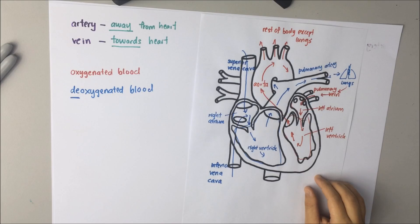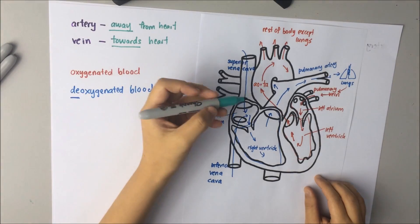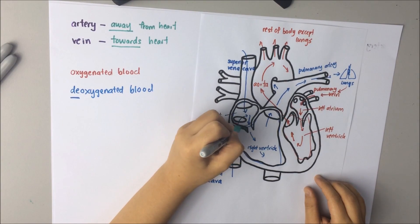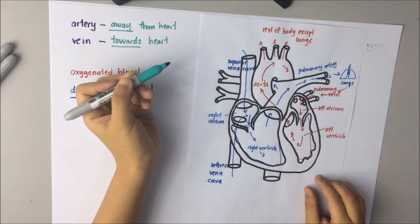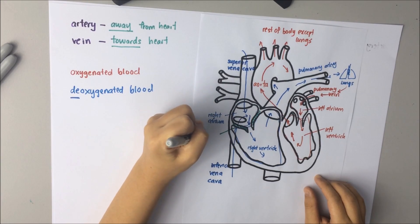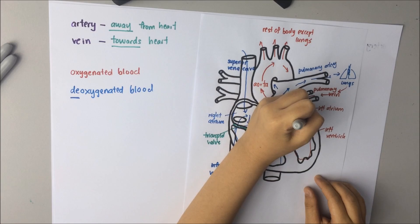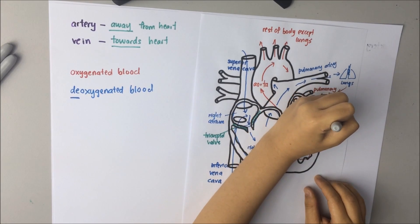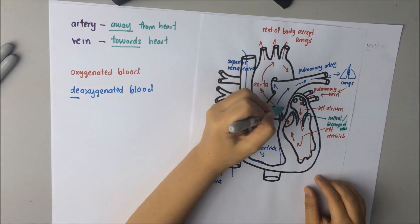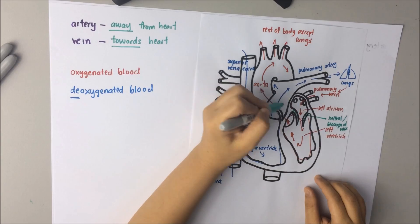There are also valves in the heart to allow that the blood flow in only one direction. These are the tricuspid valve which are on the right side of the heart. Bicuspid valve which is also known as mitral valve. These two types of valves prevent the blood flow back into the atrium.